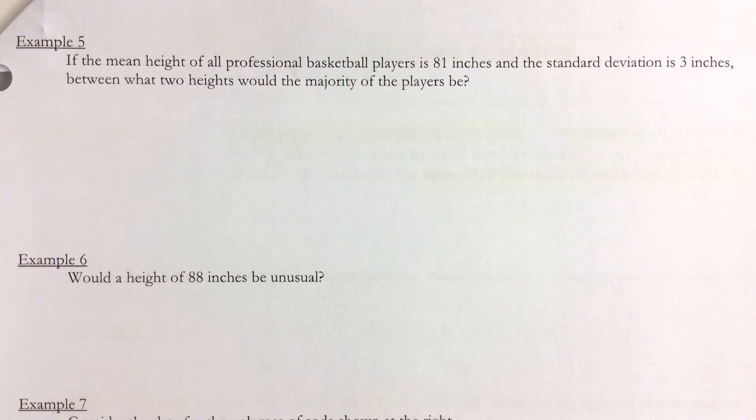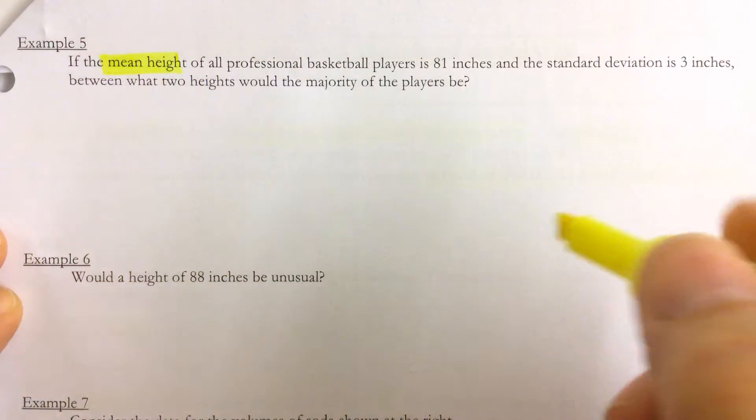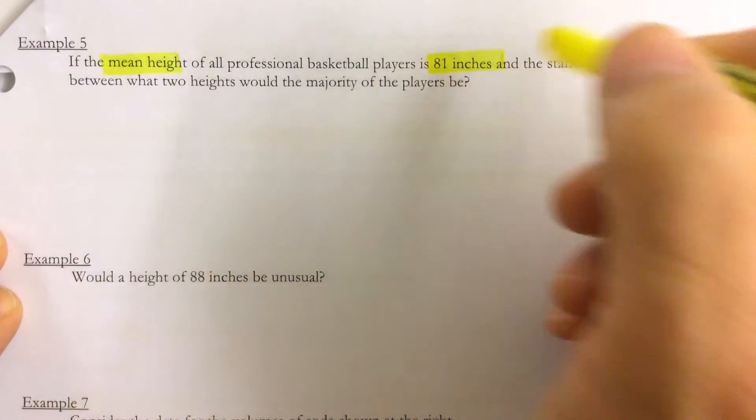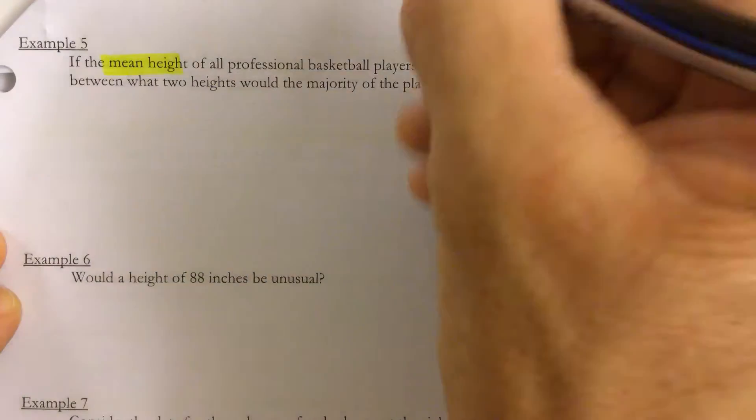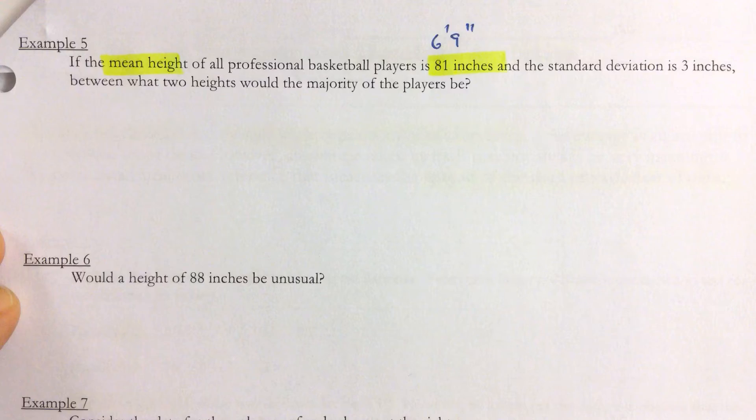So for example five, I think this is a pretty accurate representation. If the mean height of all professional basketball players is 81 inches—and 81 inches is six feet nine inches—and the standard deviation is three inches.